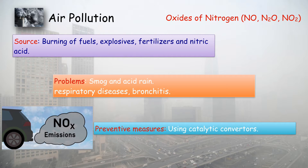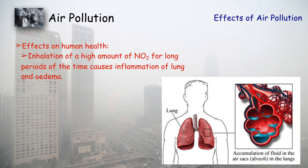Catalytic converters are catalysts that allow the same combustion reaction — carbon reacting with oxygen — to happen at a lower temperature. At lower temperatures, only carbon burns and produces energy, so carbon dioxide and oxides of nitrogen are not formed, and ozone is also not produced.